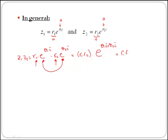If you take i as a common factor, then we have e to the power of (θ1 plus θ2)i. So this is the modulus of your final number, and this is the angle of your final number.